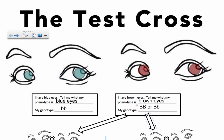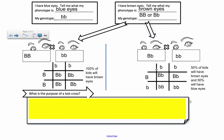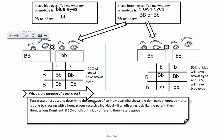Pure breeding usually means they're not heterozygous - they're either big B big B or two copies of the same allele, whatever trait we're talking about, whether it's leaf color, seed color, or seed shape. The purpose of a test cross is to determine the genotype of an individual who shows the dominant phenotype. This is done by crossing with a homozygous recessive individual. If all offspring look like the parent - all brown - then homozygous dominant is the actual genotype. If 50% of the offspring are different, then the parent was actually heterozygous.